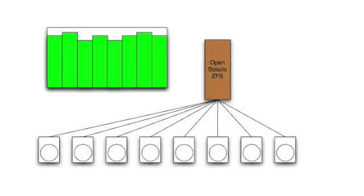In this demonstration, we will be creating a RAID Z2 Stripe Group. In this group of drives, all the data is written so that if any two fail, the data still exists. This works because of how ZFS writes redundant data into the stripes. In this case, we will have eight drives attached to a single machine. The graph in the upper left-hand corner represents the read traffic coming from the drives.